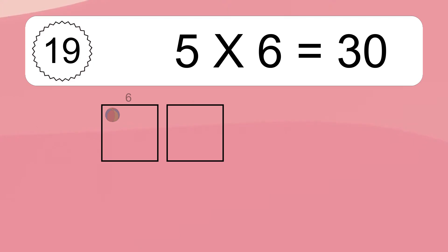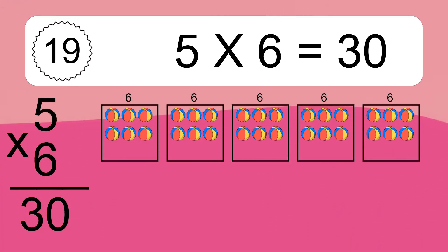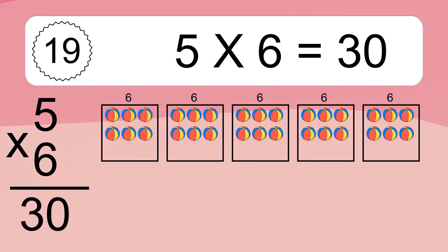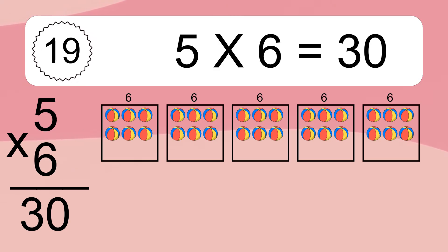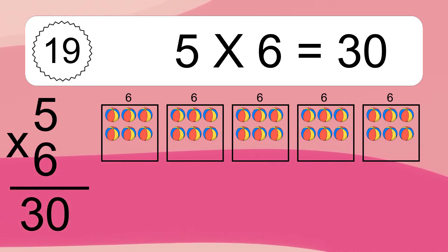5 times 6 equals what? 5 times 6 equals 30. We have 5 boxes, and each box has 6 colorful balls inside. If you count all the balls in all the boxes together, you will have 5 times 6 balls. This equals 30 balls.